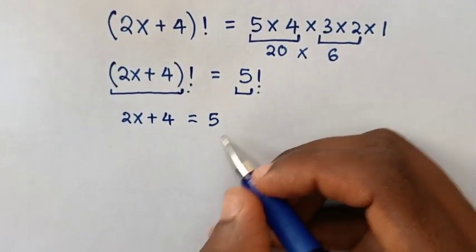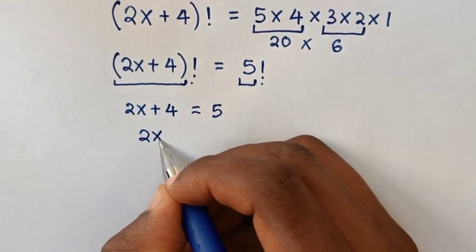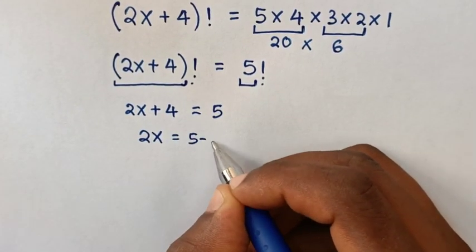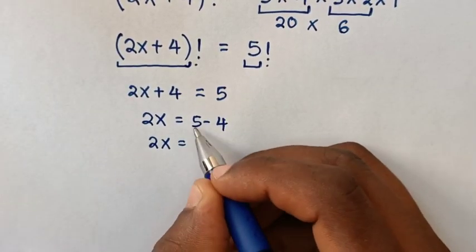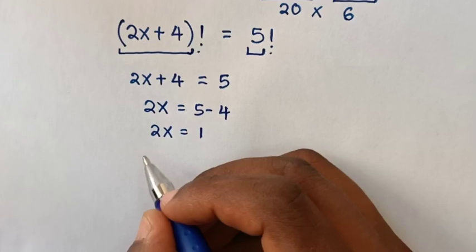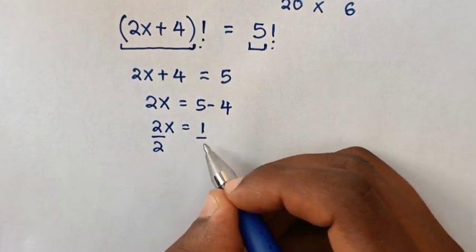Then in the next step we take 4 to the right side, so it will be 2x is equal to 5 minus 4. Then 2x is equal to 1, then we divide by 2 on both sides.